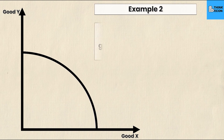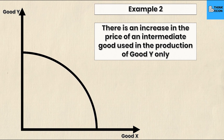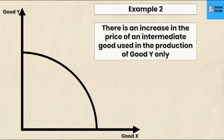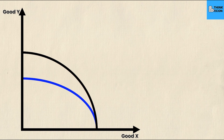Example two: an increase in the price of an intermediate good used in the production of only good Y. The keyword 'only good Y' means only the y-intercept will change — this is a pivot. The x-intercept does not change at all. Since there's an increase in the price of an intermediate good, the cost of producing good Y has increased, so I will produce less of good Y. Good X is not impacted because the question specifies that.